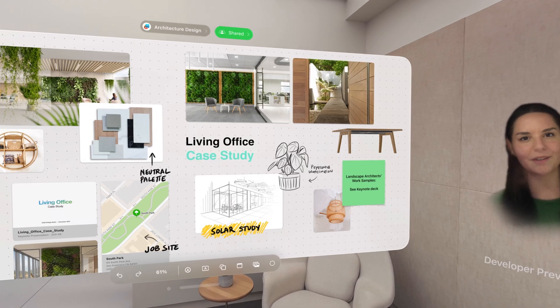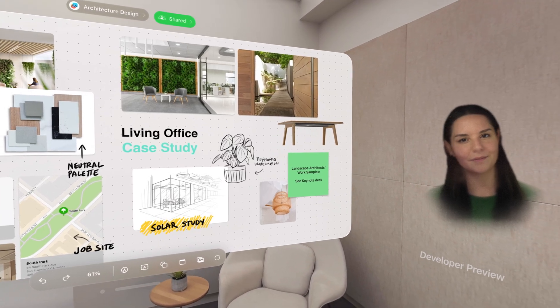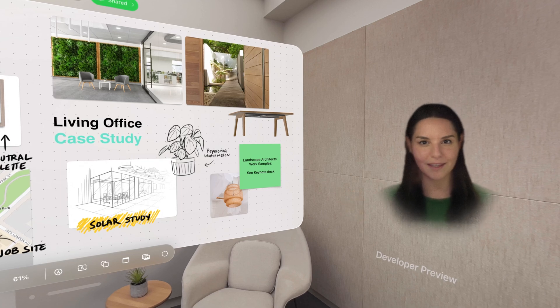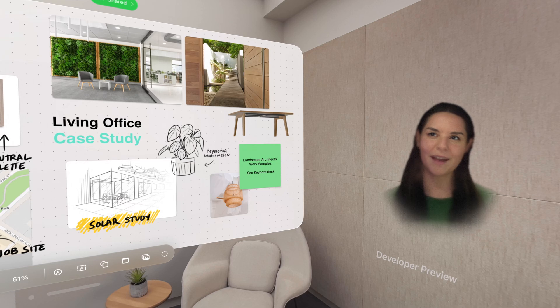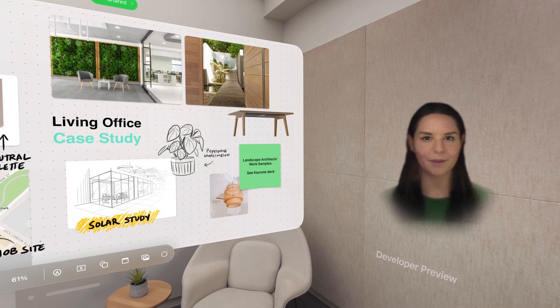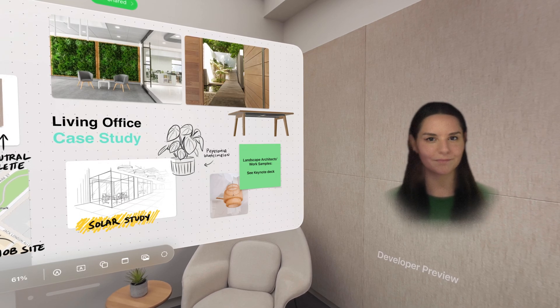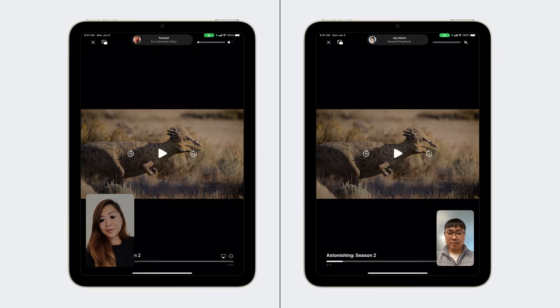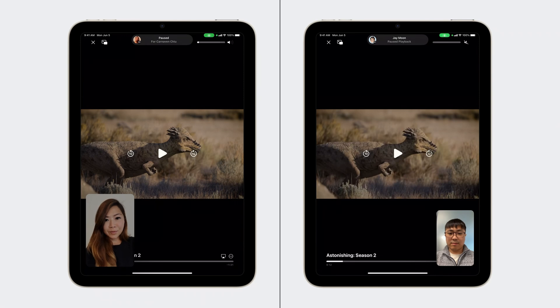In a SharePlay session, spatial personas let you feel presence with others in a way technology has never enabled before. You can look your friends in the eye, express yourself naturally with movement and body language, and best of all, enjoy a ShareActivity together using your app. These ShareActivities are a key part of what makes this an exciting new computing platform, and people will expect your app to fully support the features we're going to talk about today.